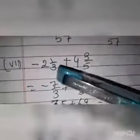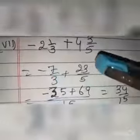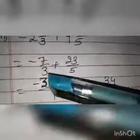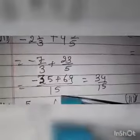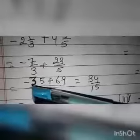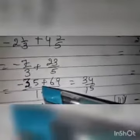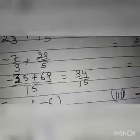Seventh part: minus 2 and 1 by 3 plus 4 and 3 by 5. First I will solve the mixed fractions — they will become minus 7 by 3 and 23 by 5. I will take LCM of 3 and 5, that is 15. In 3's table, 15 comes at 5; multiply 5 by 7 to get 35 with negative sign. In 5's table, 15 comes at 3; multiply 3 by 23 to get 69. One number is plus and one is minus, so I subtract: 69 minus 35 is 34. The sign from the bigger statement is positive, so the answer is 34 by 15.